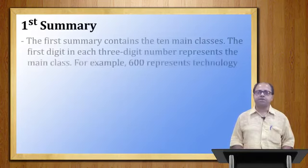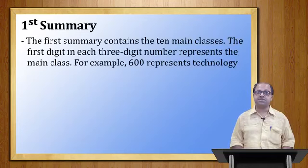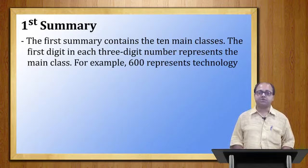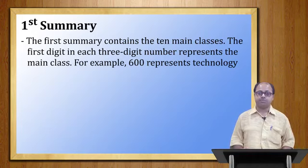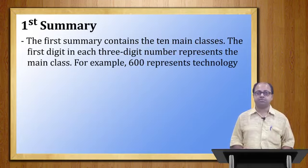The first summary contains the 10 main classes. The first digit in each three-digit number represents the main class. For example, 600 represents Technology. Here we need to remember that 6 is the digit that indicates the class number for Technology. The two zeros that follow are just fillers. So the notation for the Technology class is 6, written as 600. The last two zeros are nothing but fillers.